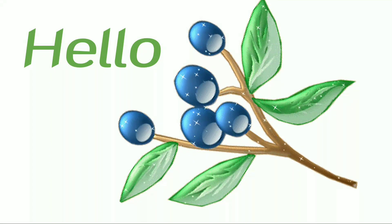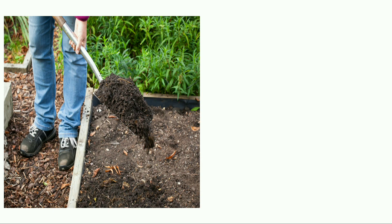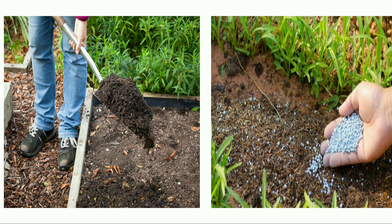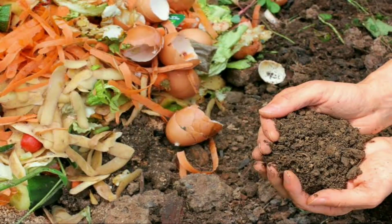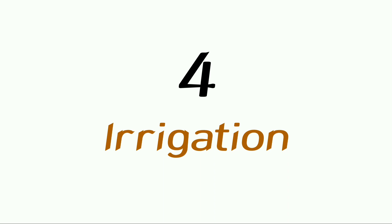Hello everyone, hope you all are doing well. In today's video, let us continue with the next part of the lesson: crop production and management. In the previous video, we had studied about the third agricultural practice, that is adding manure and fertilizers. Manure is an organic substance that can be prepared by the farmers, and fertilizers are inorganic substances that are prepared in factories.